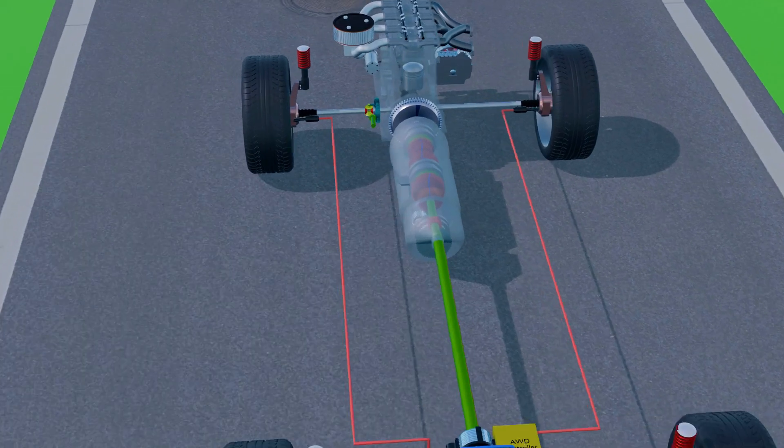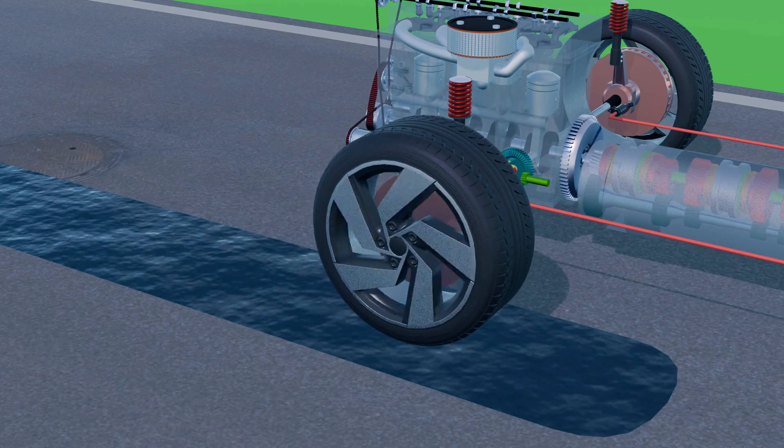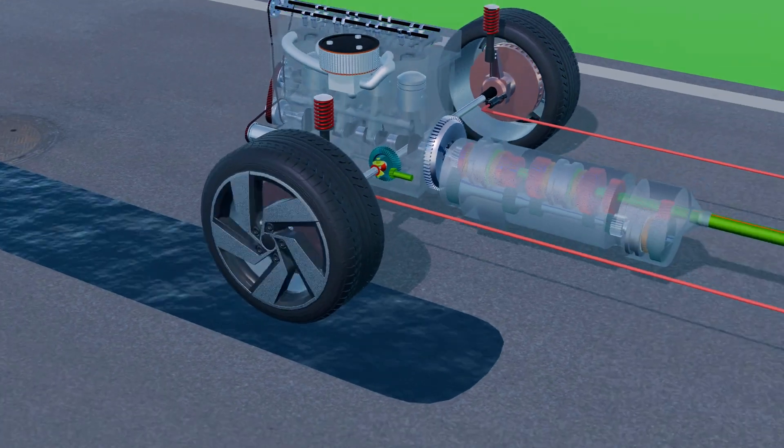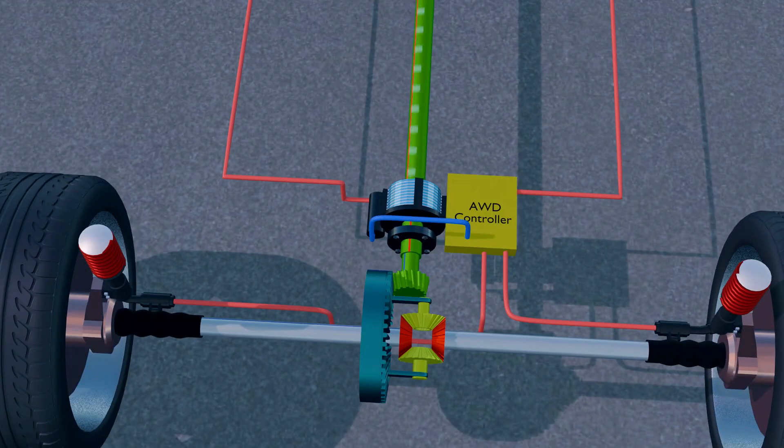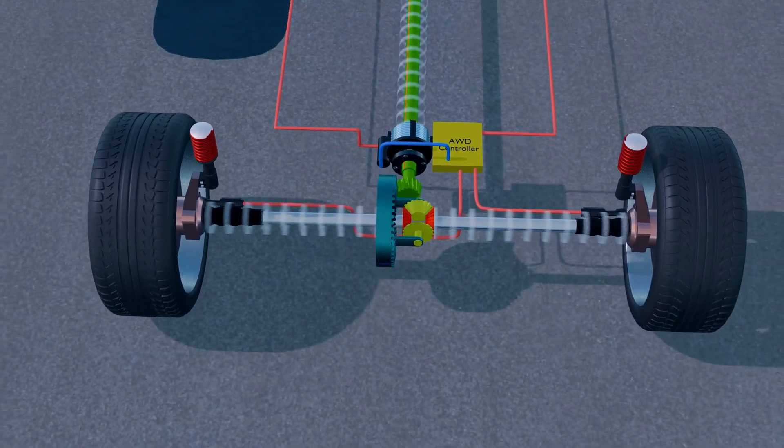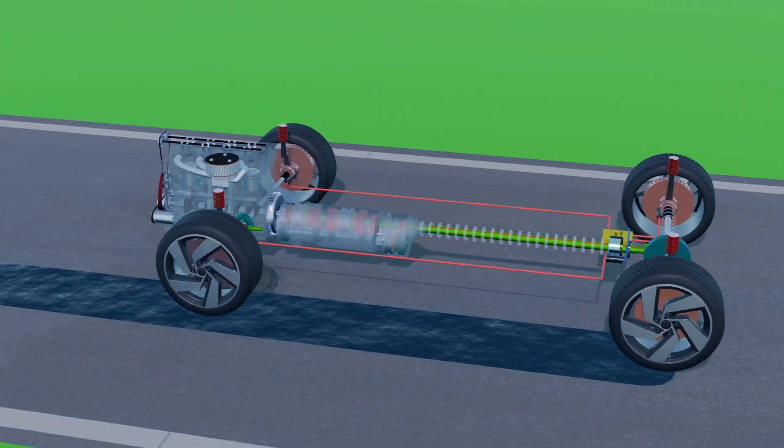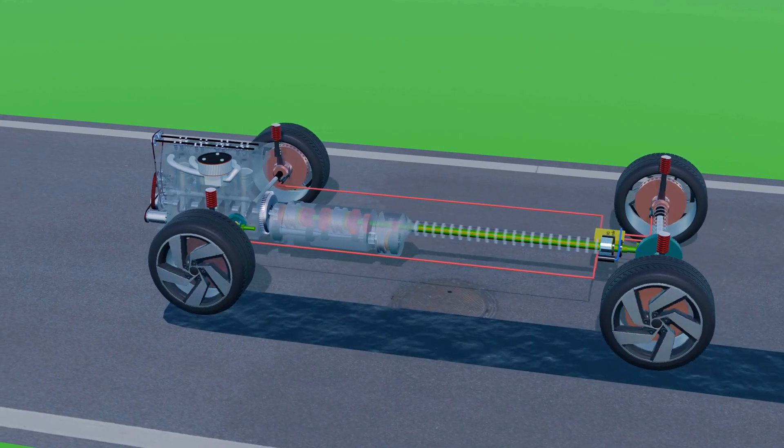Suppose one of the front wheels starts spinning faster due to a slip, the ECU detects this imbalance and instantly engages the clutch, redirecting engine power to the rear wheels. But at the same time, the system applies brakes to the spinning wheel, helping transfer power evenly across the axle, ensuring better traction and balance.